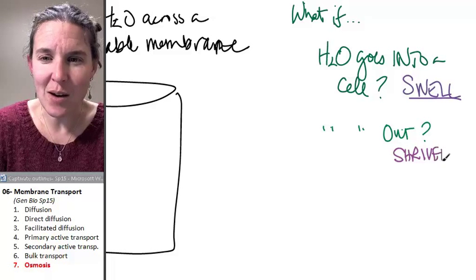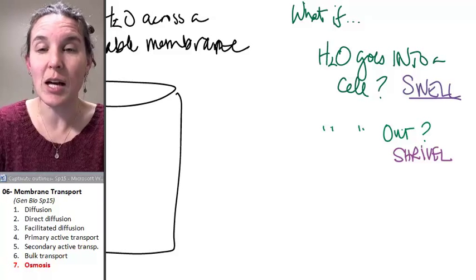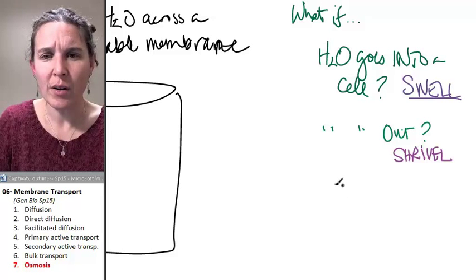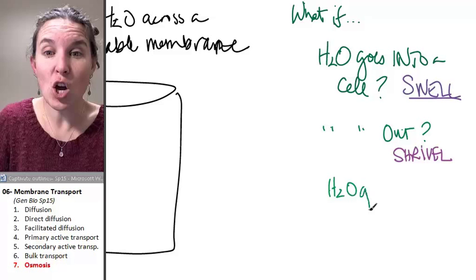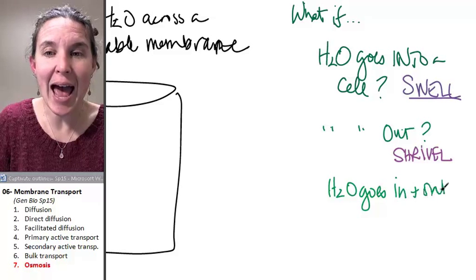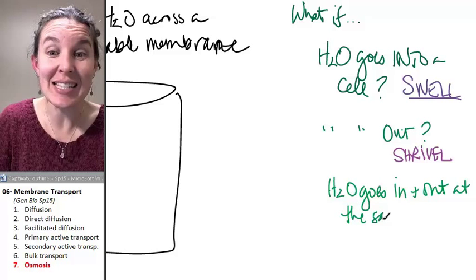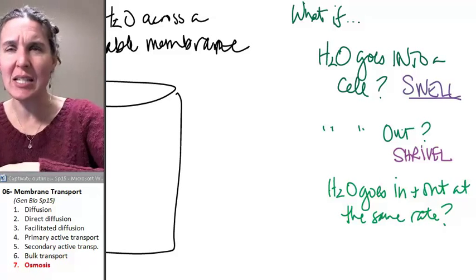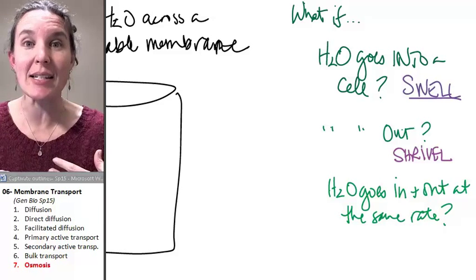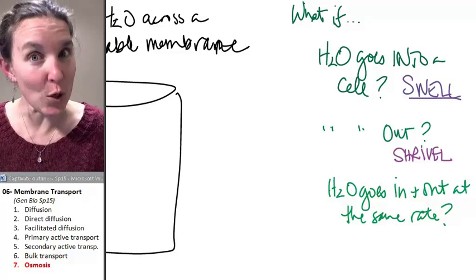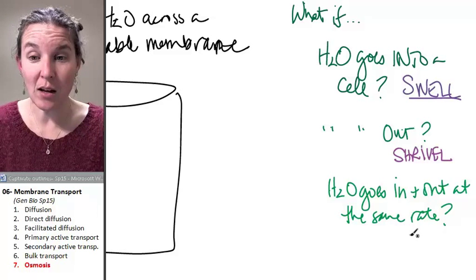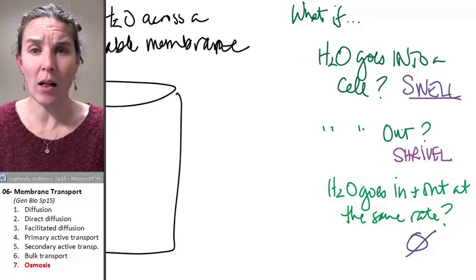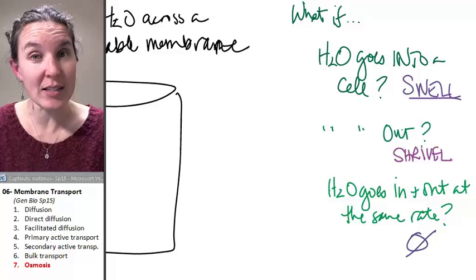How cool is that word? It's going to shrivel, shrivel up. What happens if water goes in and out at the same rate? Do you agree that if water goes into the cell and water goes out of the cell at the same rate, such that it is in equilibrium, what's going to happen to the cell? Nothing. There's going to be no change in the cell. It's not going to shrink. It's not going to swell. It's just going to stay the same because water is moving in and out at the same rate.